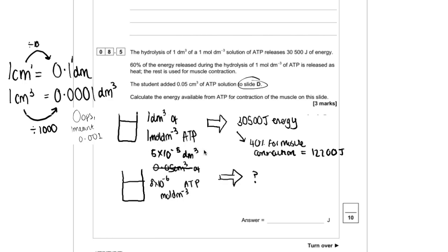So if we know how much energy a decimetre cubed of this concentration of ATP gives us, we should be able to work out how much 5 times 10 to the minus 5 decimetres cubed of this smaller concentration of ATP gives us. So we just have to multiply 12,200 by 5 times 10 to the minus 5 and by 8 times 10 to the minus 6. And that should give us 4.88 times 10 to the power of minus 6.